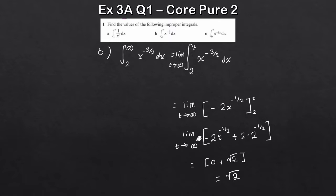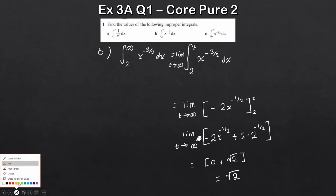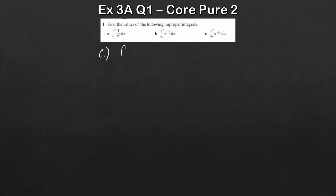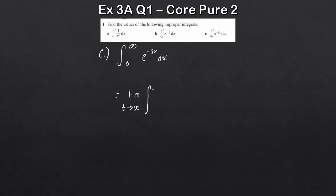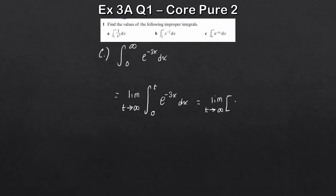Finally, let's look at part C, which involves e. Exact same method again — we're integrating e to the minus 3x dx from 0 to infinity. We take the limit as t tends to infinity and replace the upper limit with t. Integrating an exponential: consider the derivative and divide by it. That gives us minus e to the minus 3x divided by 3, between 0 and t.